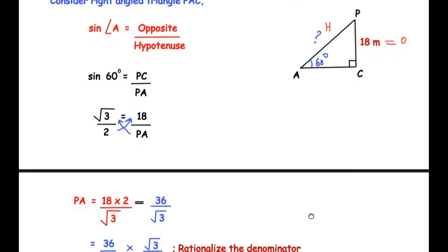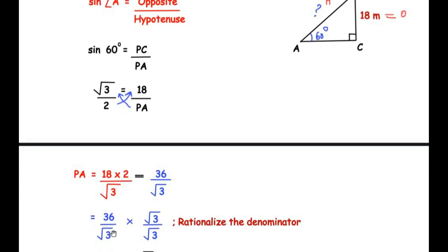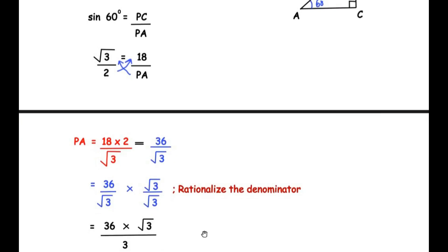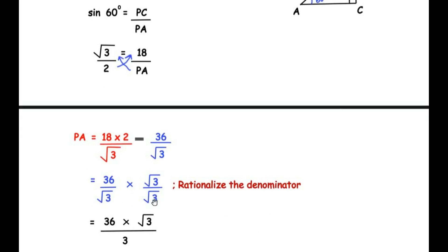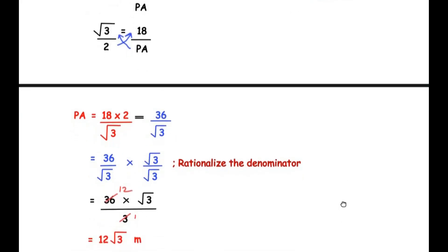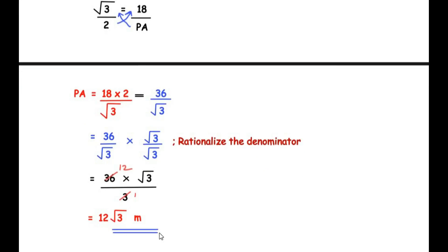Rationalizing the denominator: 36/√3 × √3/√3 gives 36√3 in the numerator and √3 × √3 = 3 in the denominator. Since 36 ÷ 3 = 12, the value of PA is 12√3 meters. Now let us move on to the second sub-question.